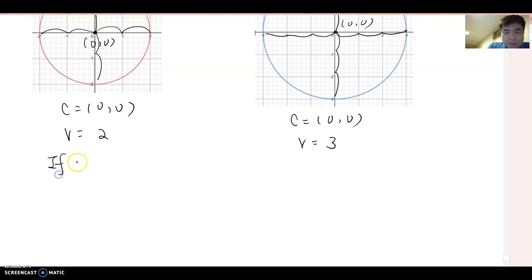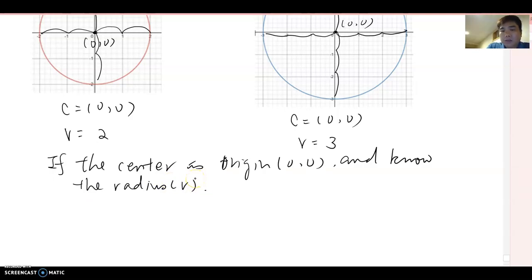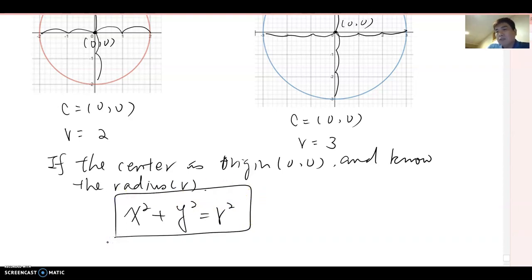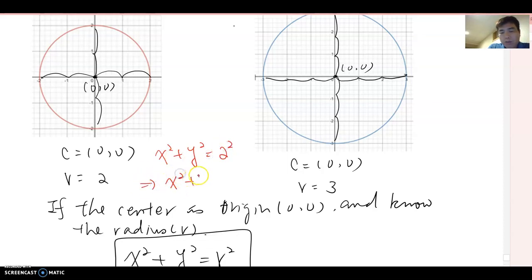Now, how do we define the equation of the circle? If the center is the origin — zero comma zero — and we know the radius, then the equation of the circle becomes x squared plus y squared equals r squared. That's the general form of the equation of the circle when the center is the origin.